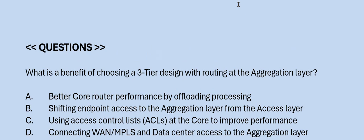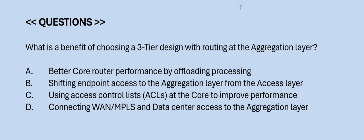Question: What is the benefit of choosing a 3-tier design with routing at the aggregation layer? Option A: better core router performance by offloading processing. Option B: shifting endpoint access to the aggregation layer from the access layer. Option C: using access control lists at the core to improve performance. Option D: connecting WAN MPLS and data center access to the aggregation layer. The correct answer is Option A.